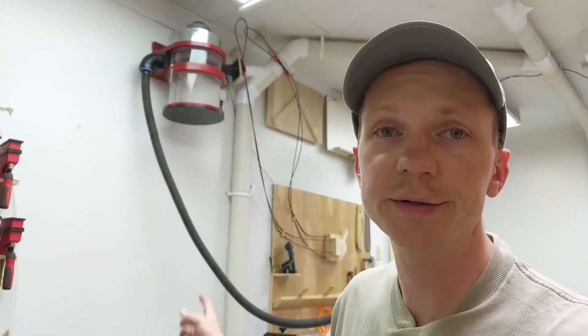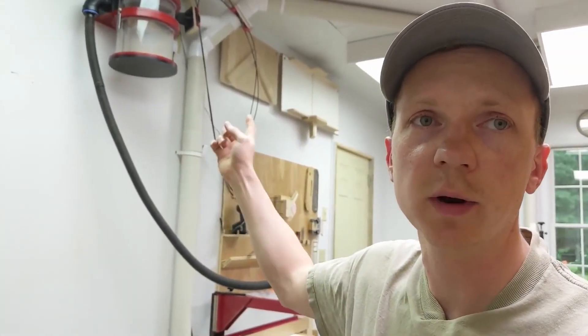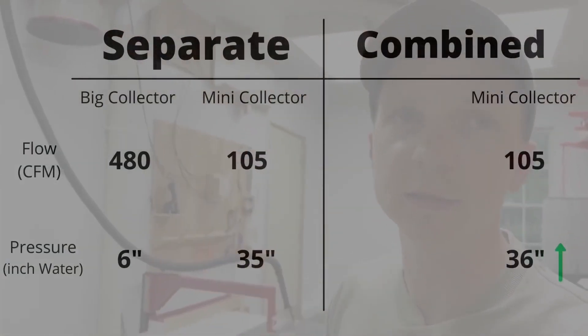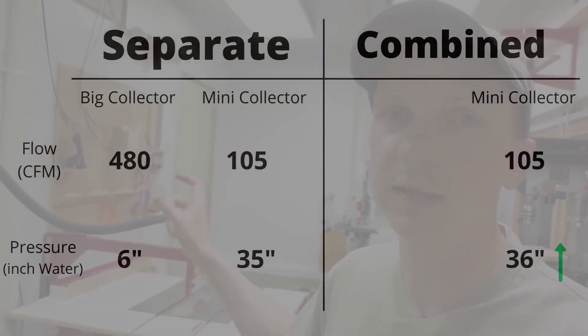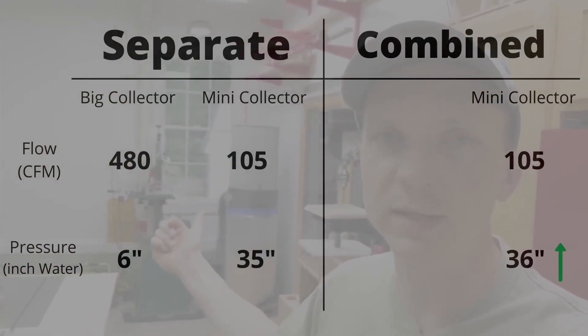We also learned that the mini dust collector, when it's hooked up to the big dust collector, maintains essentially the same airflow at the nozzle but the pressure went up slightly, I guess due to the additive pressure from the big dust collector as it's sucking on the little dust collector.